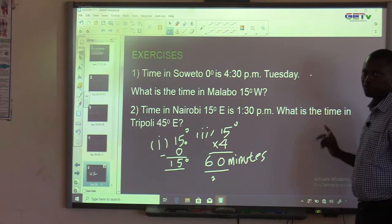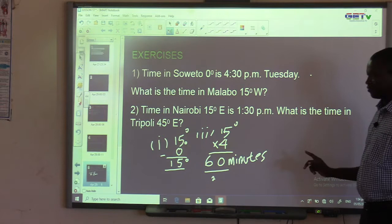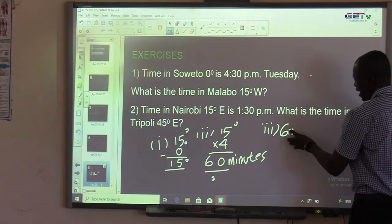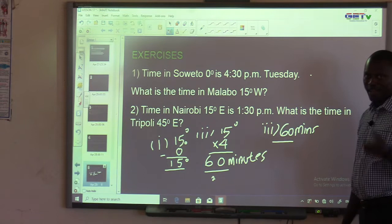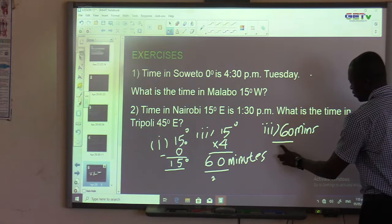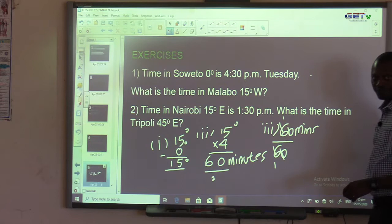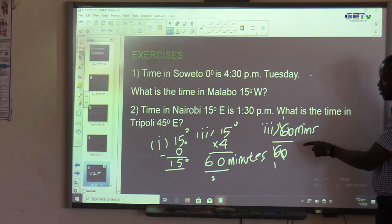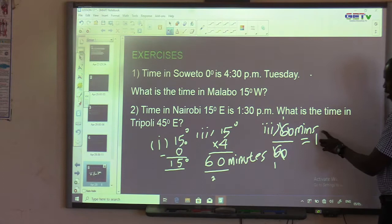Step 3: 60 minutes divided by 60 equals 1 hour. Even if you reach 60 minutes, you haven't exhausted the steps — proceed to step 3, then step 4, which is where you reach your answer. You can write HR for hour, or write it in full as H-O-U-R.